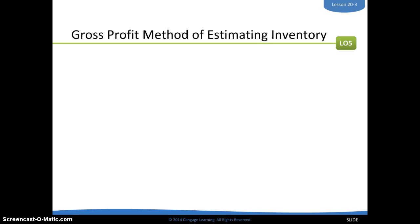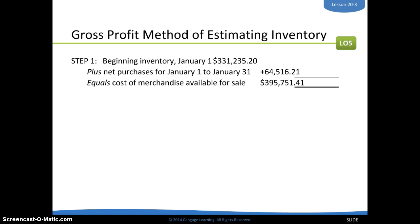There are four steps to doing this gross profit method. The first step: you're going to use your beginning inventory — the merchandise inventory account — what it was on January 1st or the beginning of a particular month. Then you're going to add in your net purchases. Remember that net purchases are purchases less purchases returns and purchases discounts. So you add your net purchases and you get the cost of merchandise available for sale.